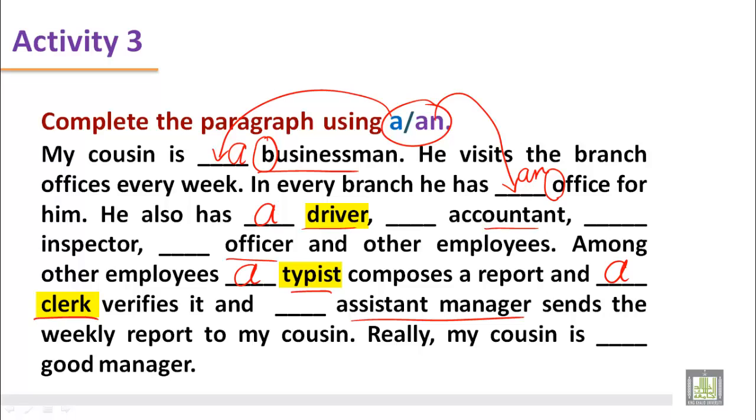For the other professions like accountant, we see the word begins with a vowel. So we are going to put An: accountant, officer, an officer, assistant manager, an assistant manager, inspector, an inspector. And the last one we can see. Really my cousin is... So we can find good. It begins with G. It is definitely A before good manager.